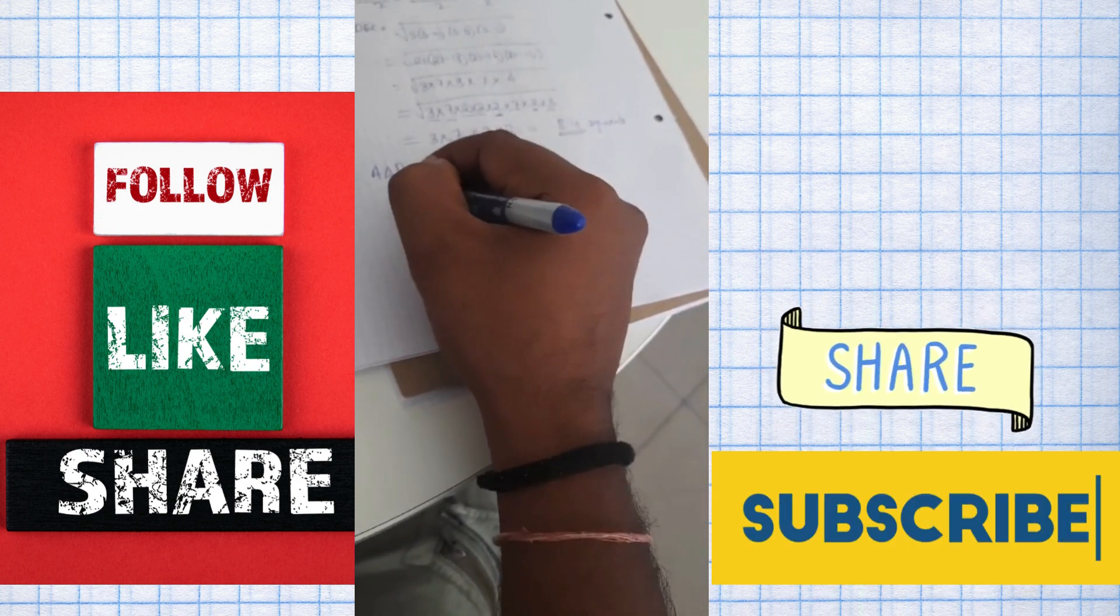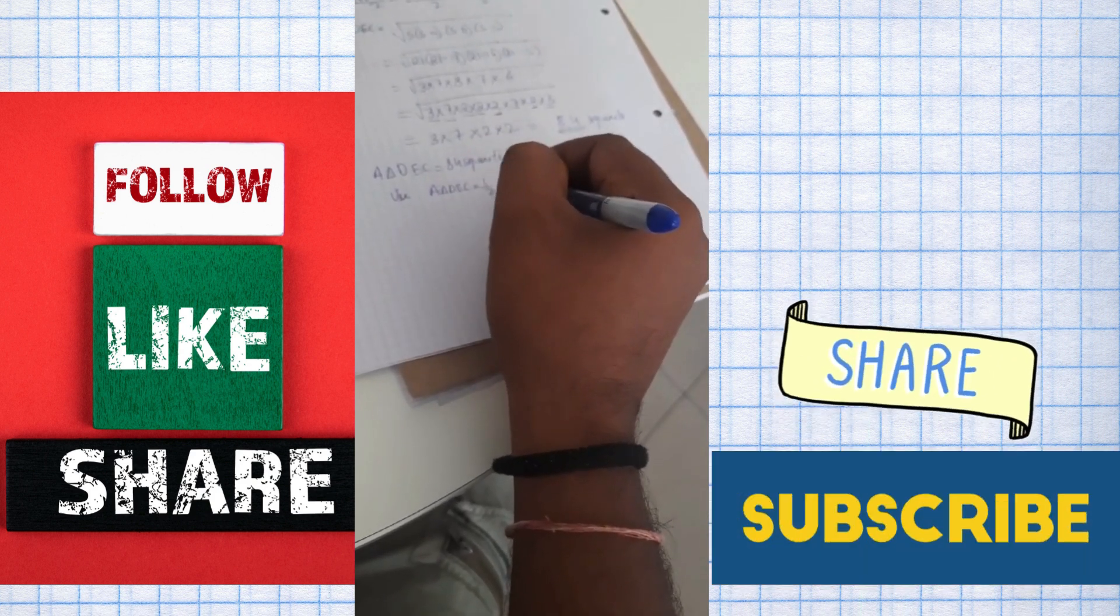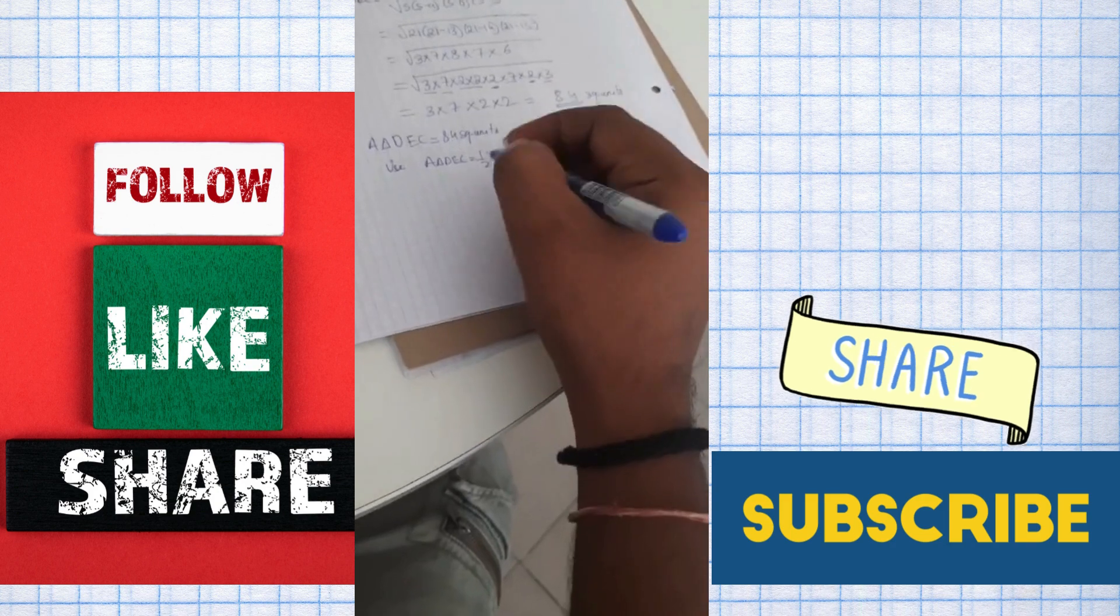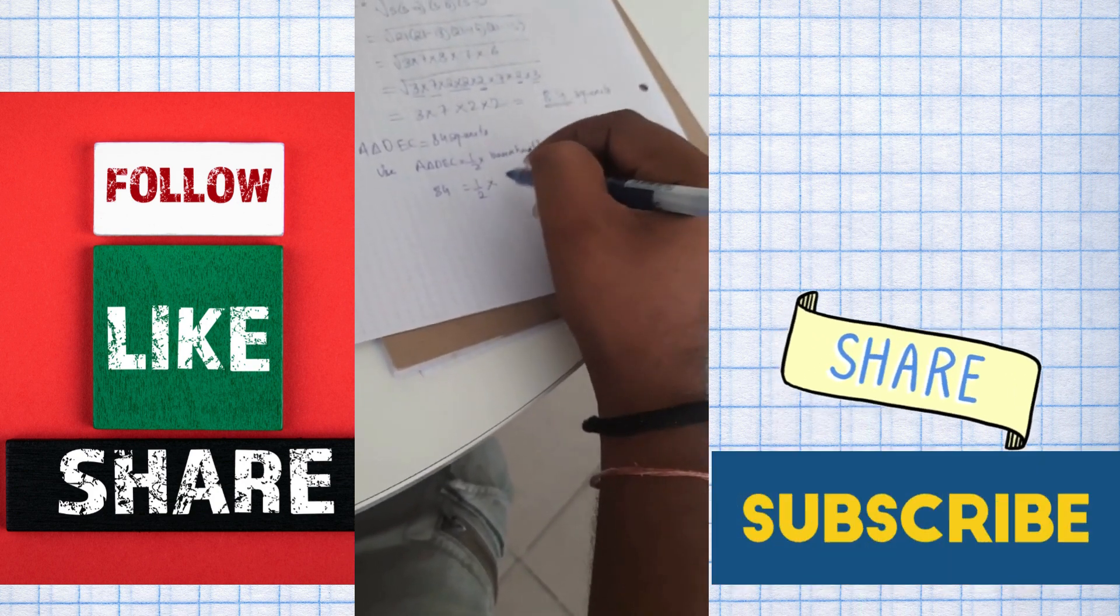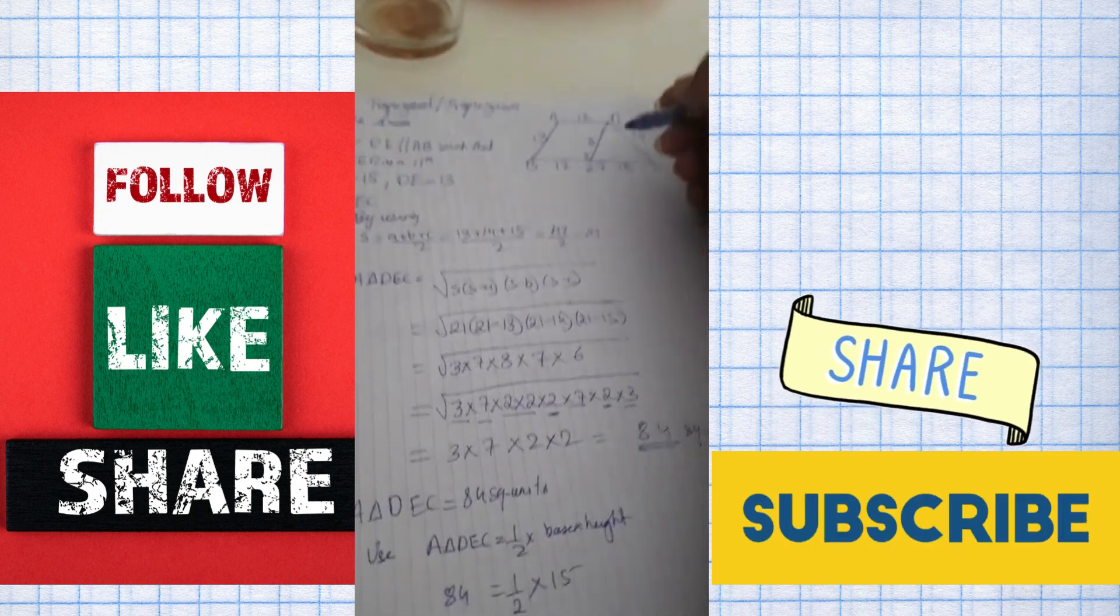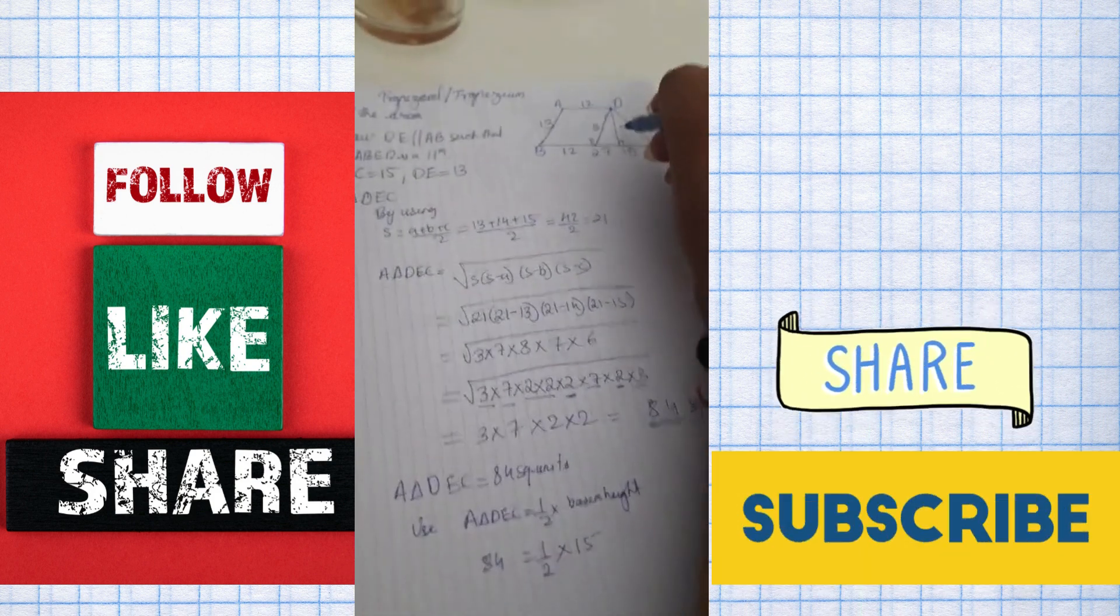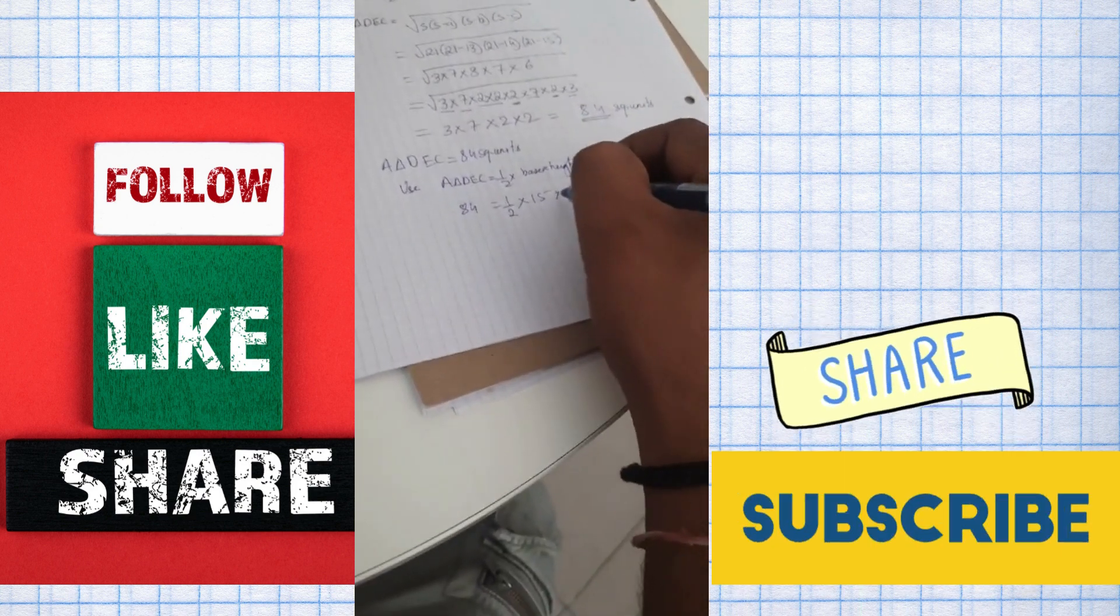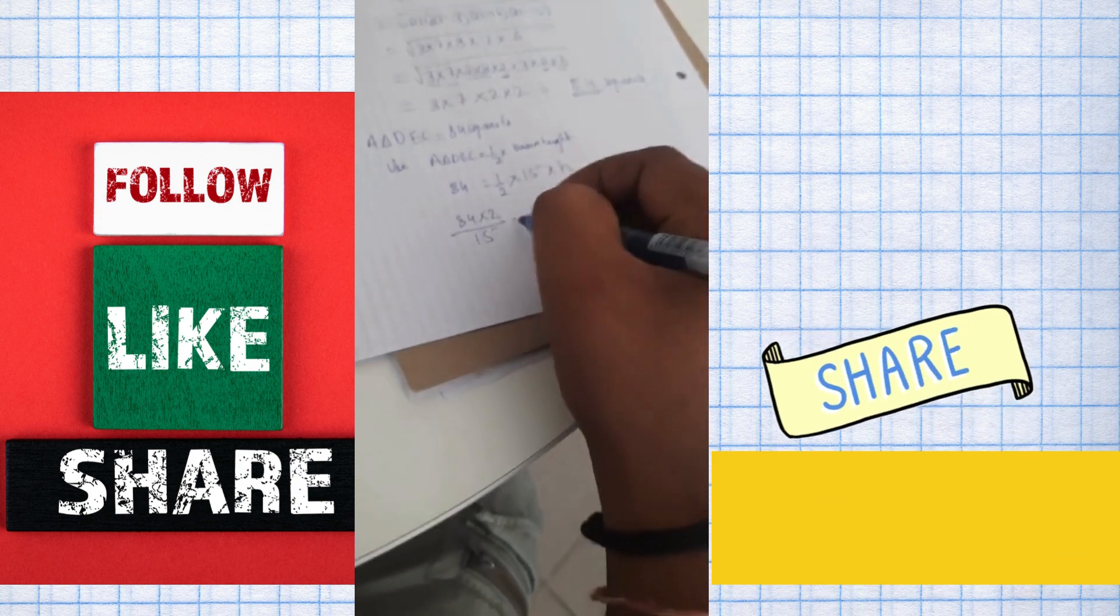So that is the area of triangle D, E, C is 84 square units. Now we'll use area of triangle D, E, C. Base is E, C which is 15. Now we can understand we can draw a height which is apparently also the height of the parallelogram.